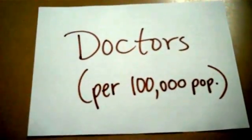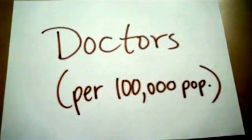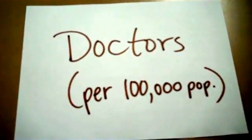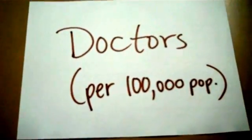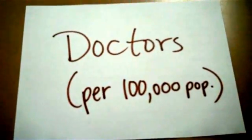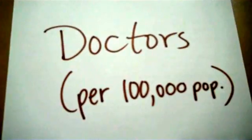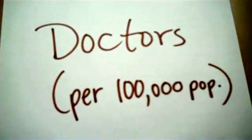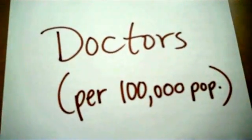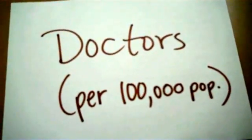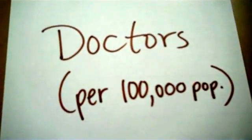Another indicator of the standard of living of a country is how many doctors they have per 100,000 people. If a country has a lot of doctors to go around, that country probably has a good standard of living, because health is a part of standard of living. If a lot of people in your country are sick and there aren't many doctors and it's hard for people to go to the doctor, then the standard of living of that country might be pretty low.